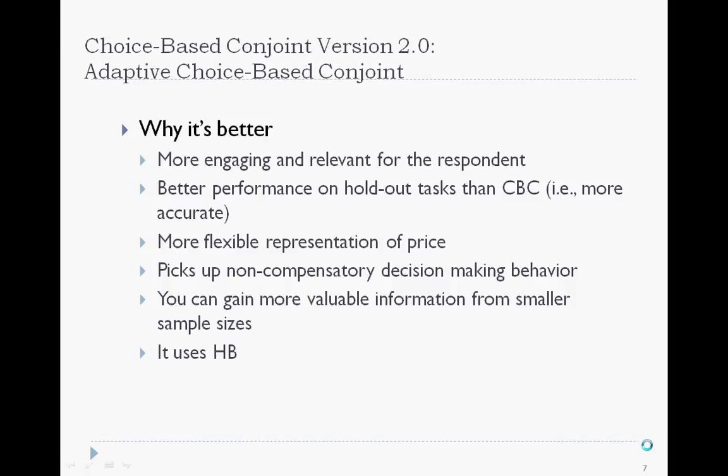If you thought HB was a great advancement, hold on for what's even newer and better: CBC version 2.0. I'm talking about adaptive choice-based conjoint — ACBC. The adaptive CBC task has a variety of sections that help better engage the respondent, and the interview adapts to the respondent's choices to make the interview more relevant. Research on the research shows that model accuracy is even better with ACBC using HB. Price can also be represented in a more flexible, realistic way.